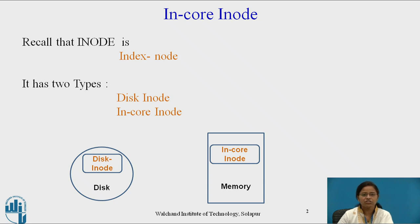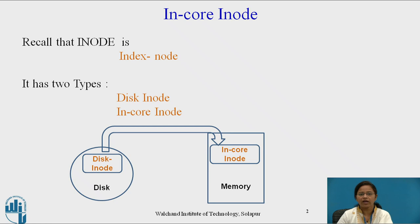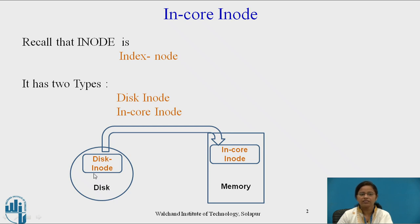Whenever the kernel wishes to access the copy of an i-node, it has to copy the content of the disk i-node into the in-core i-node. So disk i-node is nothing but the disk copy, while in-core i-node is nothing but the memory copy. The in-core copy may differ from the disk copy. The contents of an i-node get changed whenever there is a change in file content, ownership, or permissions. So it is necessary to write the content of this in-core i-node back into the disk i-node to maintain the consistency of the data.